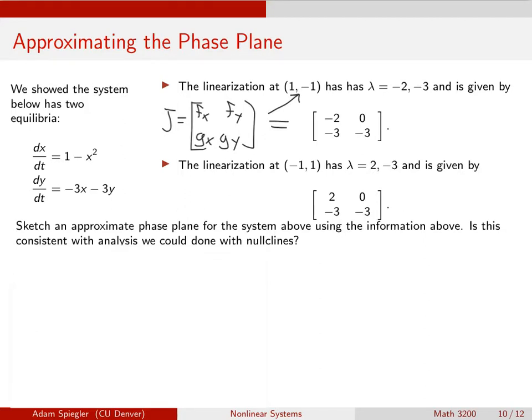And for the equilibrium at (-1, 1), it's the same Jacobian, but now we evaluate it at a different point, and that's where these coefficients come from.